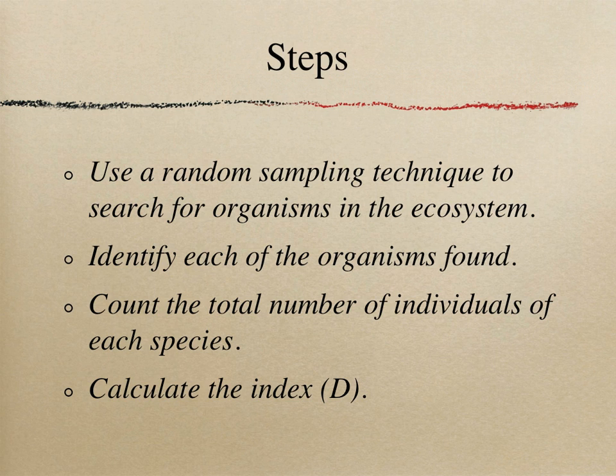Here are the steps of Simpson Diversity Index. First, use a random sampling technique to search for organisms in an ecosystem. Random sampling techniques include quadrats and transects. Then, identify each of the organisms found — this step categorizes the living organisms to get more accurate species richness. Third, count the total number of individuals of each species and organize the data in a table. Lastly, calculate the index with Simpson Diversity Index.